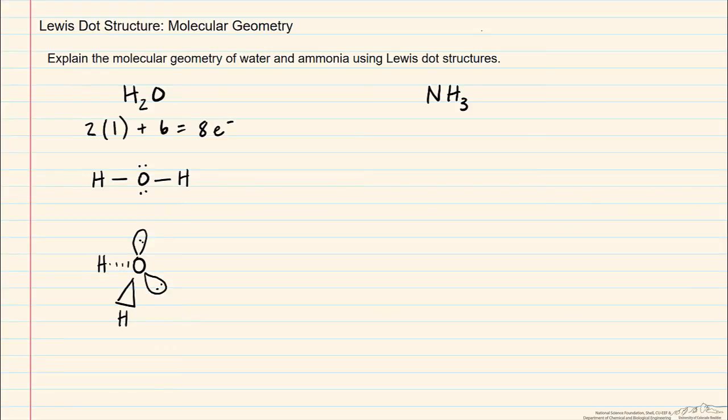We can do the same analysis for ammonia. Nitrogen is five valence electrons. We again get three times one for the hydrogen atoms, which gives us a total of eight valence electrons, just like in water.